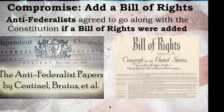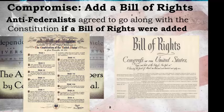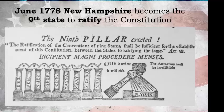A compromise was reached. The Anti-Federalists agreed — many very reluctantly — to go along with this new form of government, as long as a Bill of Rights would be included with this document. And that is what happened. With the promise that a Bill of Rights would be added, state conventions began ratifying the new Constitution, and the ninth state, New Hampshire, ratifying in June of 1788, made this document official.